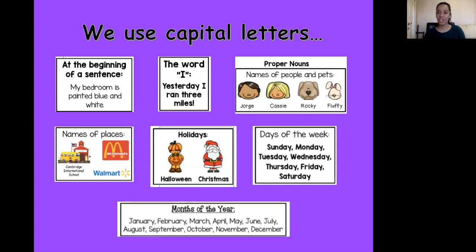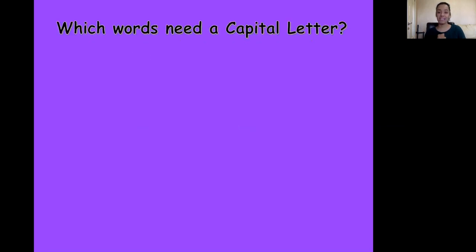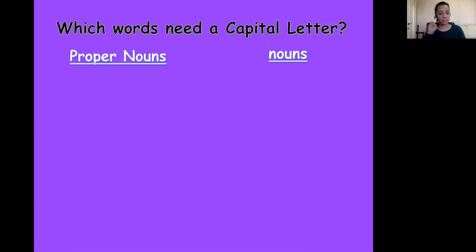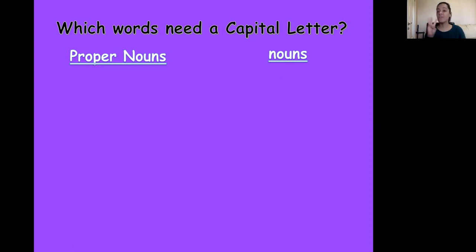And the months of the year: January, February, March, April, May, June, July, August, September, October, November, and December are all the months. We have to remember to capitalize them — make them capital letters at the beginning. Which words need a capital letter? We have proper nouns and nouns. The word noun means a person, a place, or a thing — like pizza, food, or animals. Proper nouns means the name of a person, a place, or even a very special thing. For example, my computer is an Apple — because Apple is the name of a company, we would make it capital.